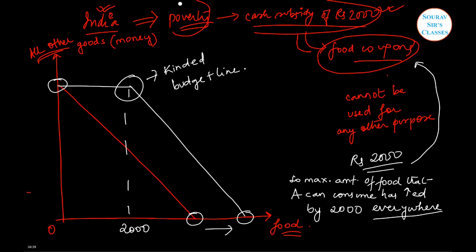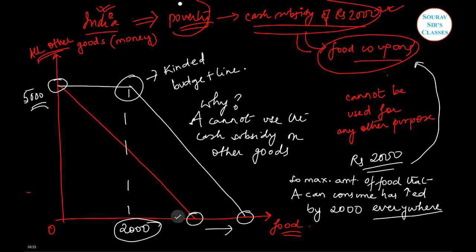Question is why? This is because A cannot use the cash subsidy on other goods. Because he cannot use the cash subsidy on other goods, he can still have, say if this was arbitrarily 5000 units of this particular good, he can still have 5000 units of this good only. This 2000 units will not be added here because it has to be exclusively spent on only food. That's why we get a kinked budget line.